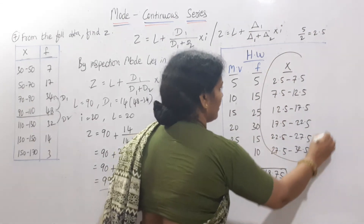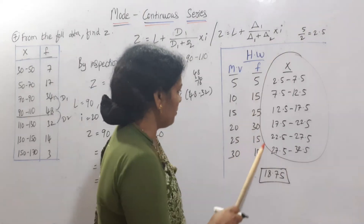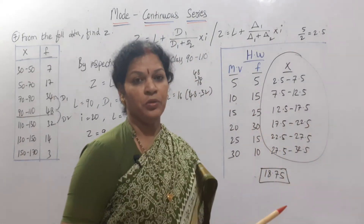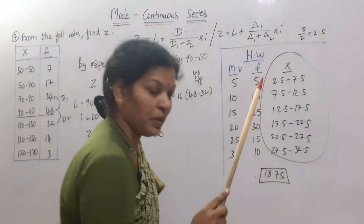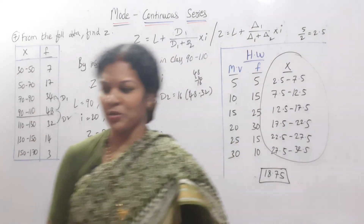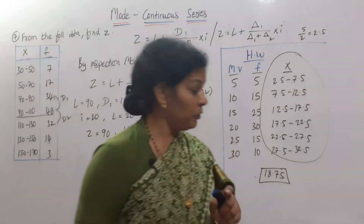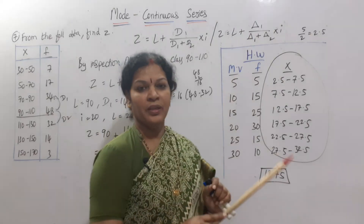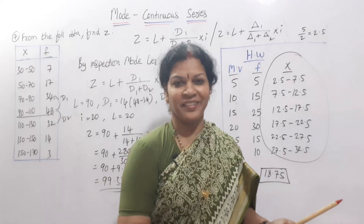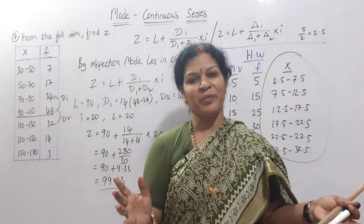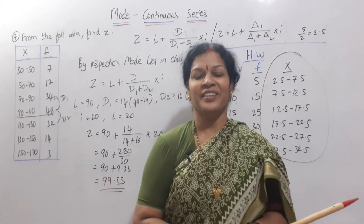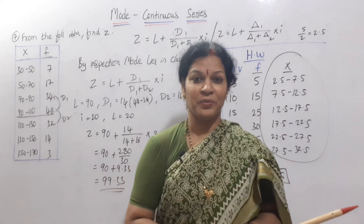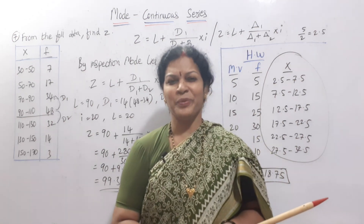Once you find X (the class intervals), look at the frequencies. By inspection, mode lies in class interval 17.5 to 22.5. Apply the same formula — your answer must be 18.75. Take a screenshot, work it out, and let me know in the comment box if you get the correct answer. Practice well, check out the playlist, and don't forget to share these videos as everything is free of cost. See you in the next class — good luck!